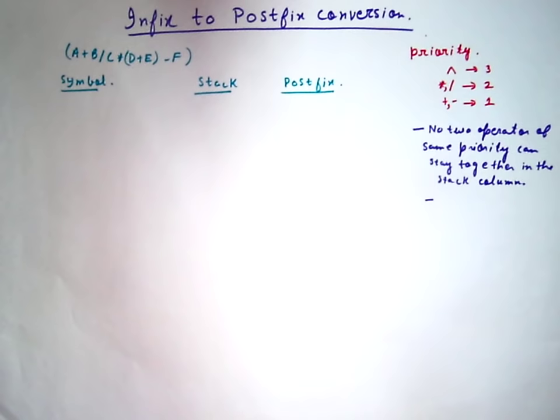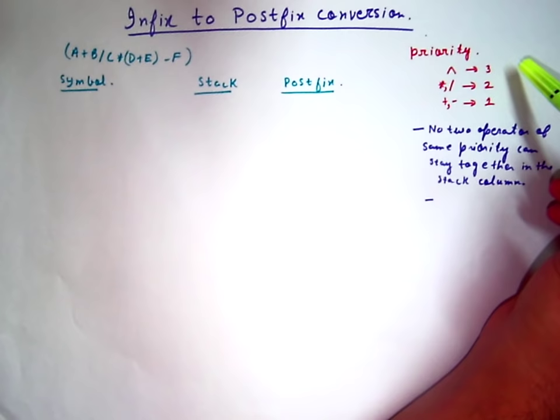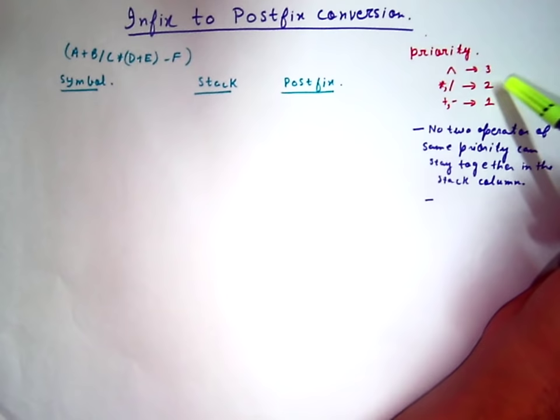Before that, first let's see what the priority of the operators are. The exponent operator has the highest priority. Then comes the multiplication and division operator. Then comes the plus and minus operator.